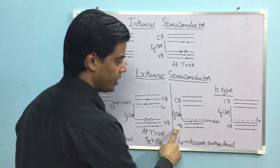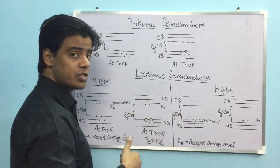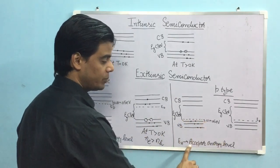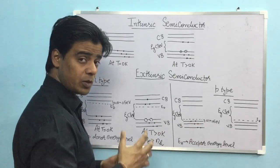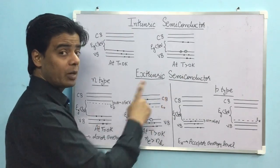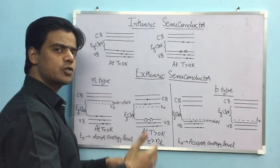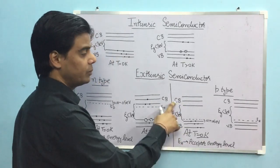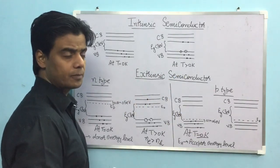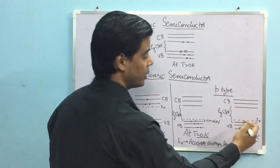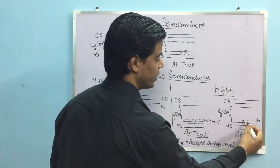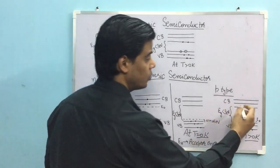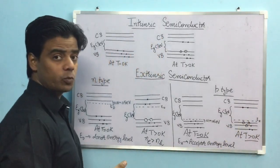For the P-type semiconductor band diagram: we have the valence band, conduction band, energy band gap, and a new feature — the acceptor energy level. When we introduced aluminium, a vacancy was created, shown as the acceptor energy level. If an electron is given energy not sufficient to reach the conduction band, it moves to the acceptor energy level. At t equal to 0, the valence band is completely filled but the conduction band is empty, so it also behaves as an insulator. As temperature increases, electrons move up and holes are created in the valence band.